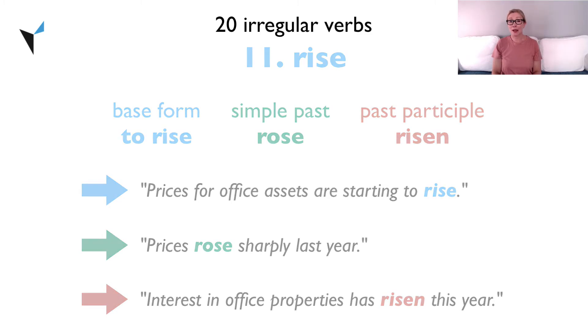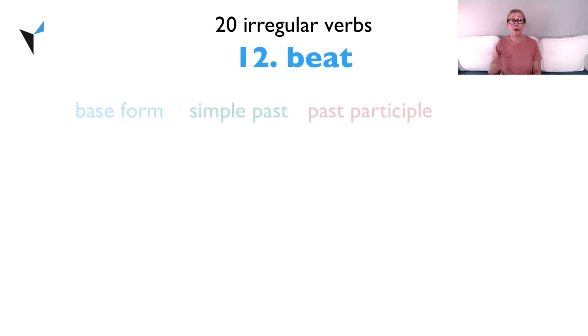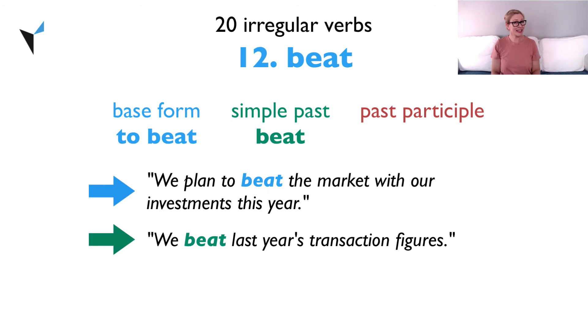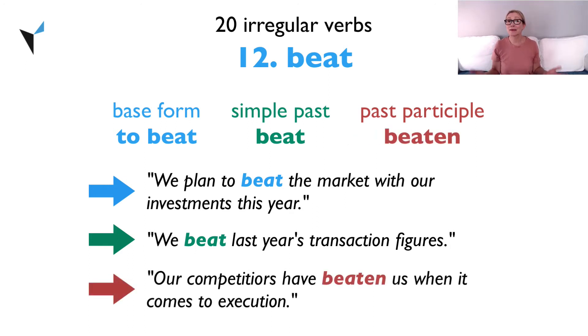Verb 12, beat. The base form is to beat. We plan to beat the market with our investments this year. The simple past is beat. We beat last year's transaction figures. And the past participle is beaten. Our competitors have beaten us when it comes to execution.